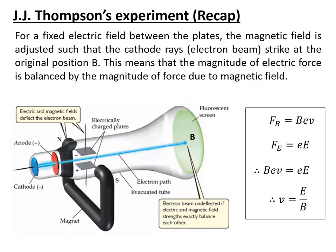Just to recap what J.J. Thomson determined: he postulated the existence of the electron and is given credit for discovering it. He used discharge tubes to measure the specific charge of the electron. He couldn't measure the charge of the electron because his method wouldn't allow him to, but he was able to measure the specific charge, which is e over m — the charge divided by the mass of an electron.